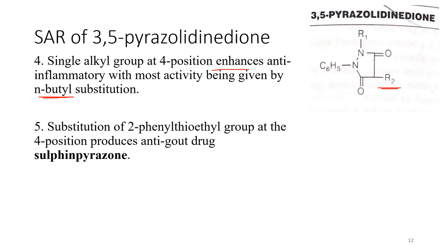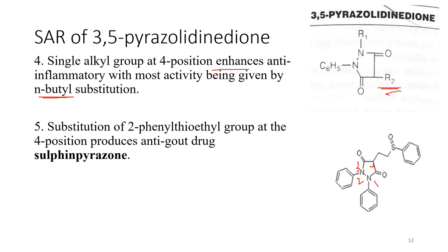Sulfinpyrazone: at the fourth position of the pyrazolidinedione ring, two phenylthioethyl groups are added to produce a drug used in gout. In the structure, at the fourth position, two phenylthioethyl substituents are present — phenyl, thio, and ethyl — present at the second position.